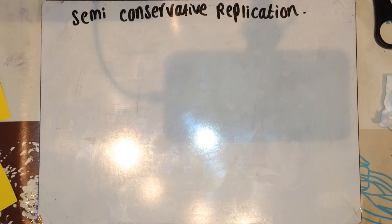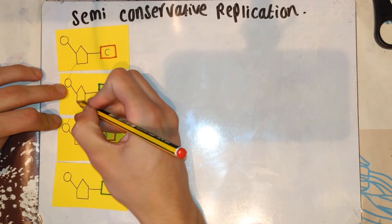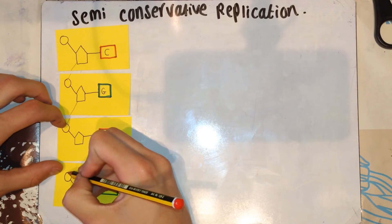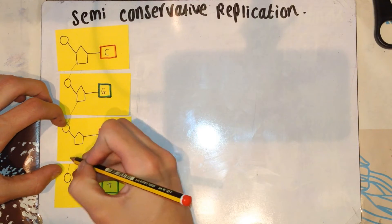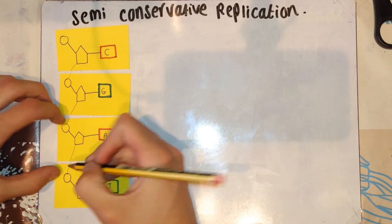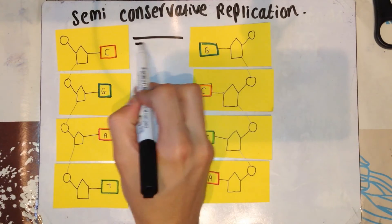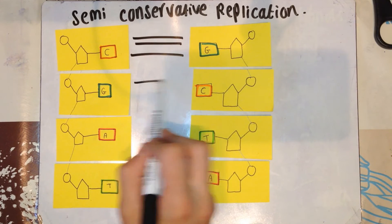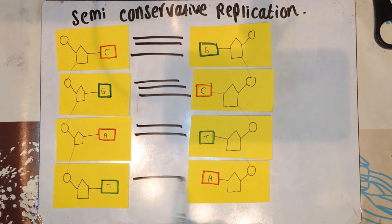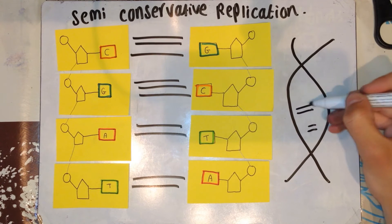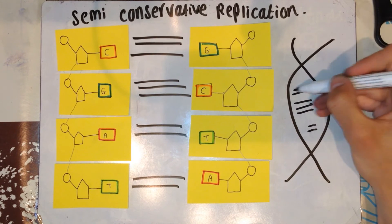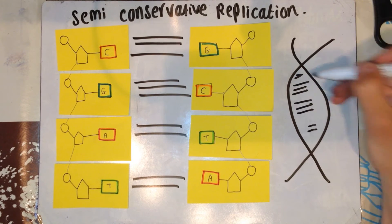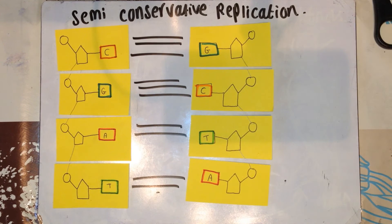I'm now going to talk about semi-conservative replication. I'm filling in the covalent bonds that connect each nucleotide together to form the backbone of the DNA. I'm going to draw my hydrogen bonds between my nucleotides. Remember, G and C make three, and A and T make two.